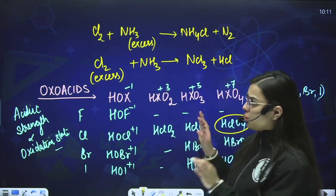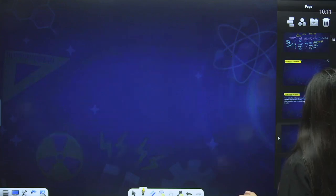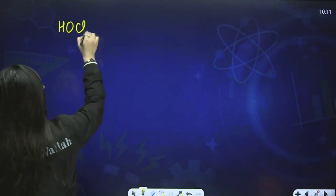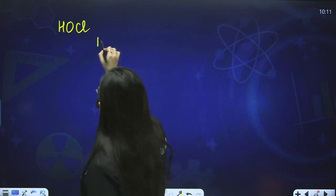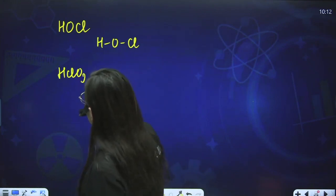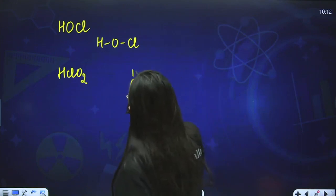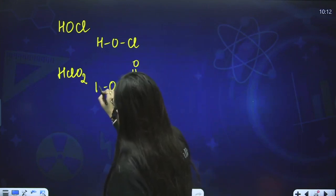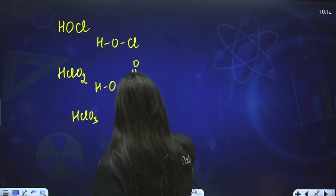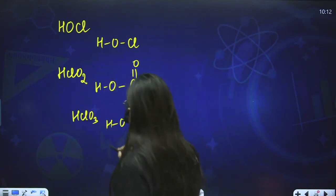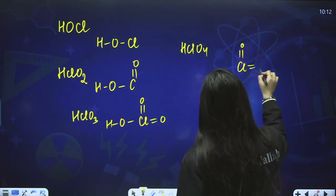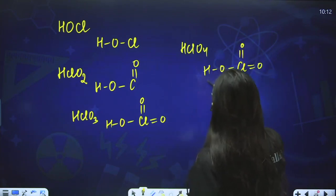Now we shall draw structures. For HClO2: Chlorine makes a double bond with one oxygen, and hydrogen is bonded to the other oxygen. For HClO3: Chlorine makes double bonds with two oxygens, and hydrogen is bonded to the third oxygen via a single bond. For HClO4: Chlorine makes double bonds with three oxygens and a single bond with one oxygen, which then bonds to hydrogen. These are the structures you need to keep in mind.